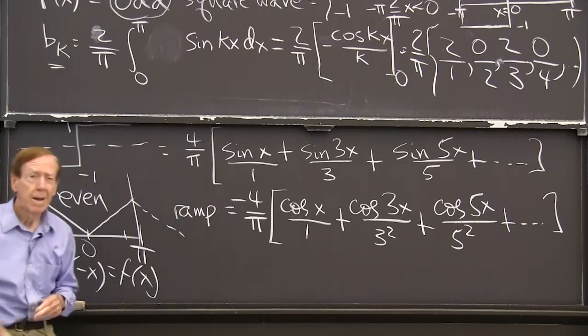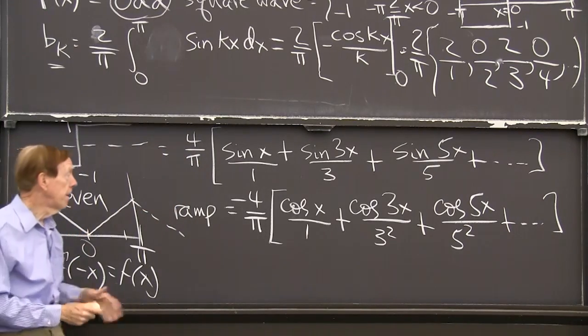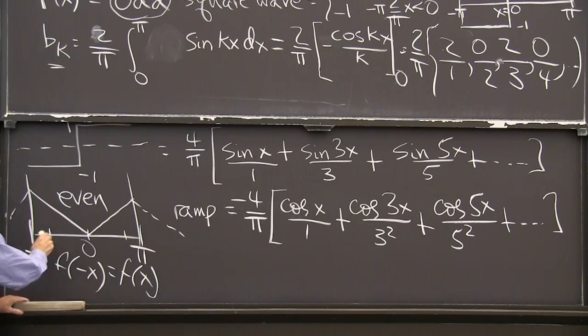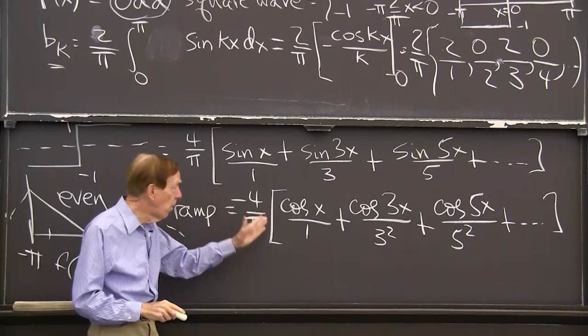Well, ha, there's something in freshman calculus which I totally forgot. The constant term. So there is a constant term, the average value, the a_0. I've only found the a_1, 2, 3, 4, 5. I haven't found the a_0.